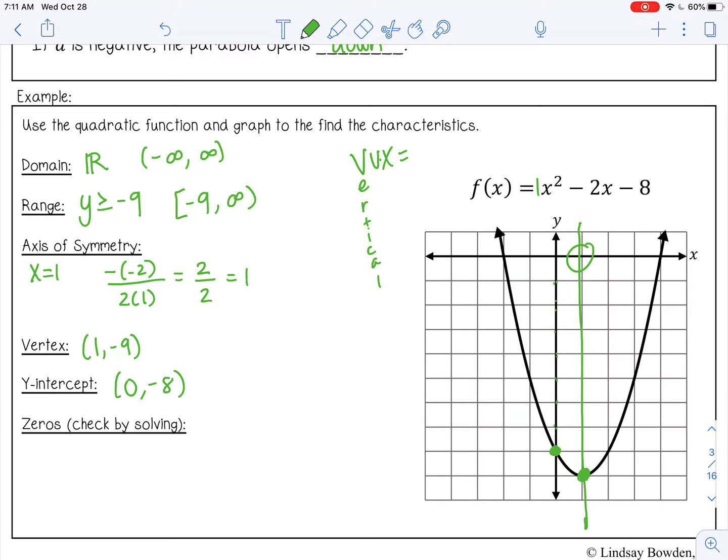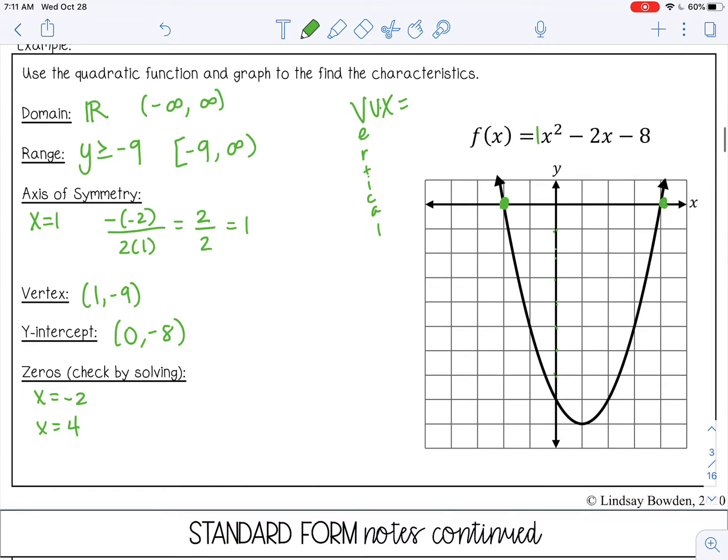And then our zeros are where the graph touches the x-axis. So it would be here and here. So x equals negative 2 and positive 4. And we want to check this by solving. We've learned how to solve. So let's check. Let's factor this.